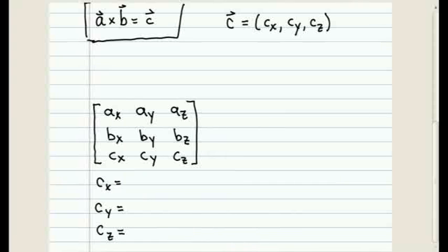Begin by writing the components of your vectors A and B as elements in a 3x3 matrix. For instance, here what I've done is I've taken AX, AY, and AZ and written them as the first row of this matrix. And I've taken BX, BY, and BZ and written them as the second row of this matrix.